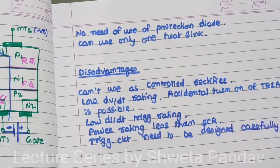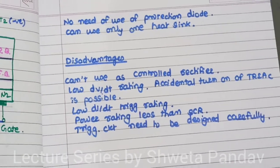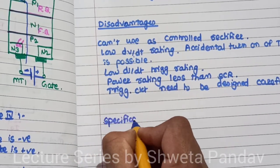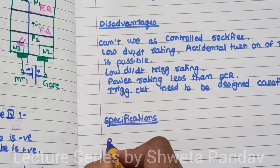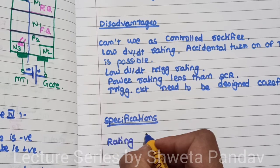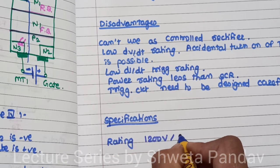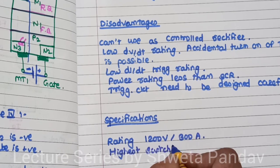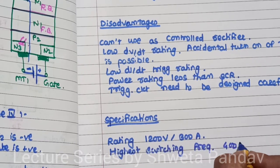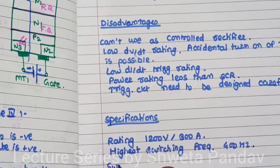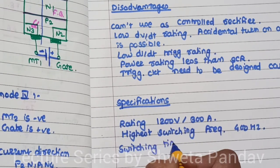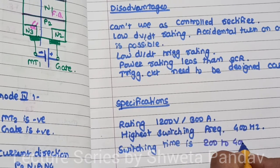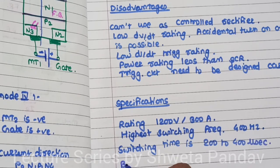In the last lecture we had seen the applications of the triac. Let us now write down some specifications. A proper triac has a rating of 1200 volts and 300 amperes. It has a higher switching frequency of 400 Hz. Its switching time is 200 to 400 microseconds, and it is a bi-directional device.